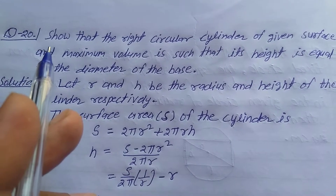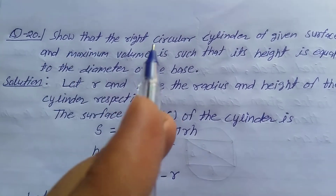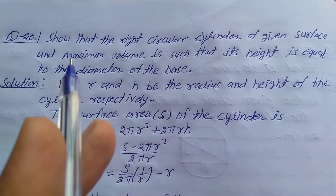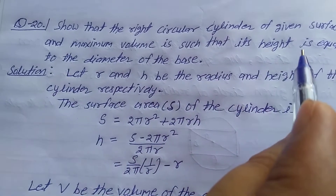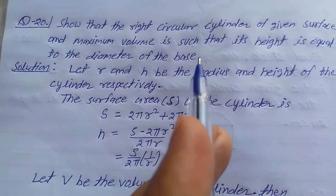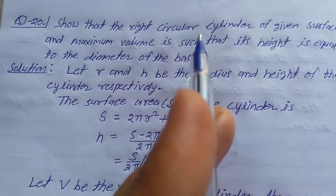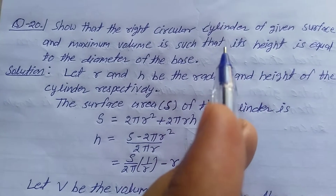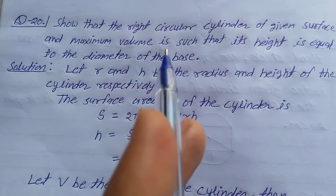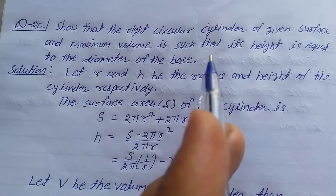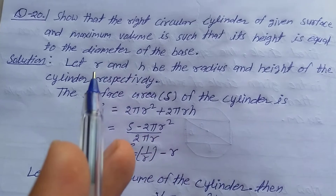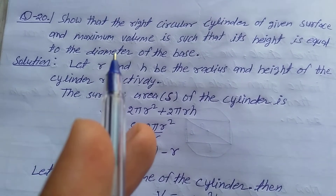Explain question number 20, exercise 6.5, class 12th. Show that the right circular cylinder of a given surface and maximum volume is such that its height is equal to the diameter of the base. The meaning is: a right circular cylinder is given, the surface is fixed, and the condition is that volume is maximum. We need to show that the height equals the diameter of the base.